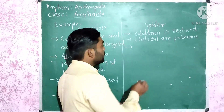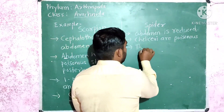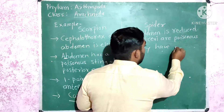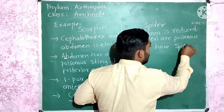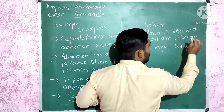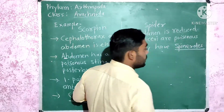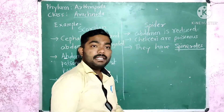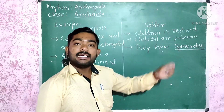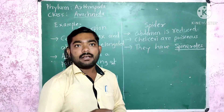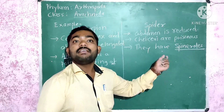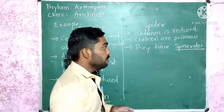Another structure they have is spinnerets. The spinnerets are the web-secreting glands — a silk-secreting structure which is useful in spinning webs.